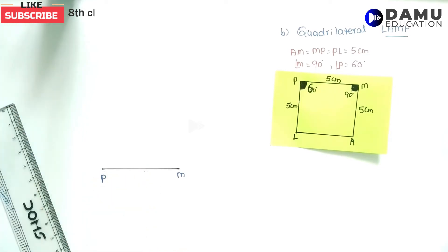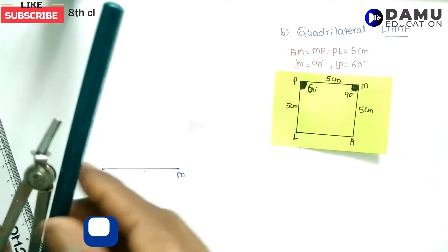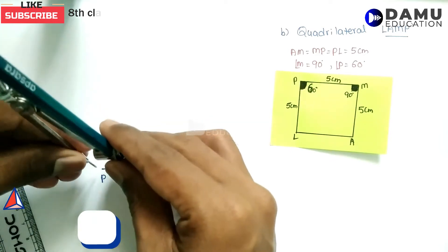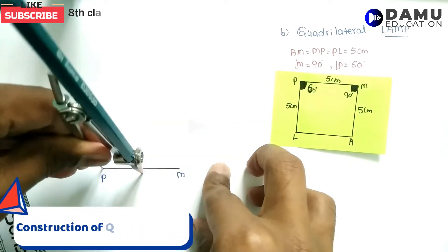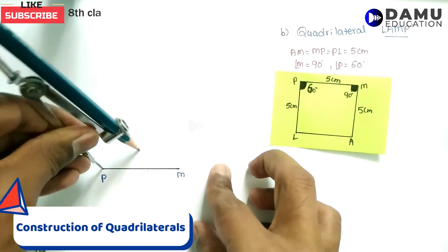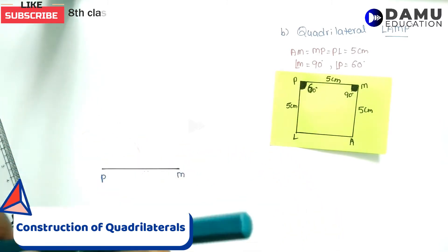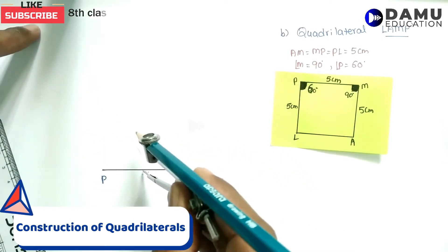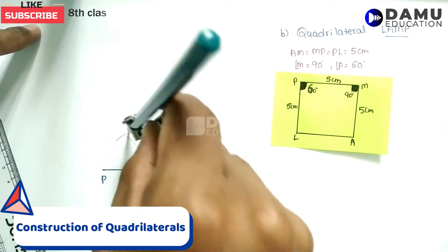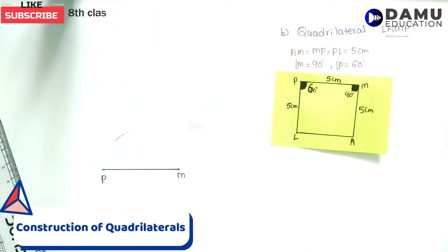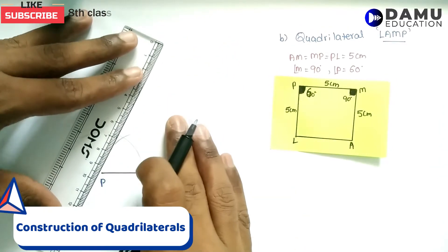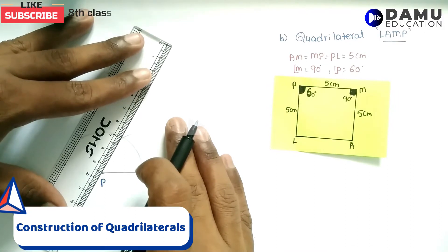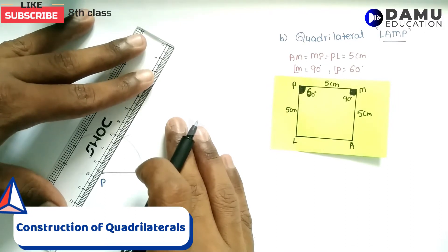At P, they are given 60 degrees, so let us construct a 60 degree angle at P. For this measurement you can take anything — it is better to take around 3 to 4 centimetres. This gives us the 60 degree angle.